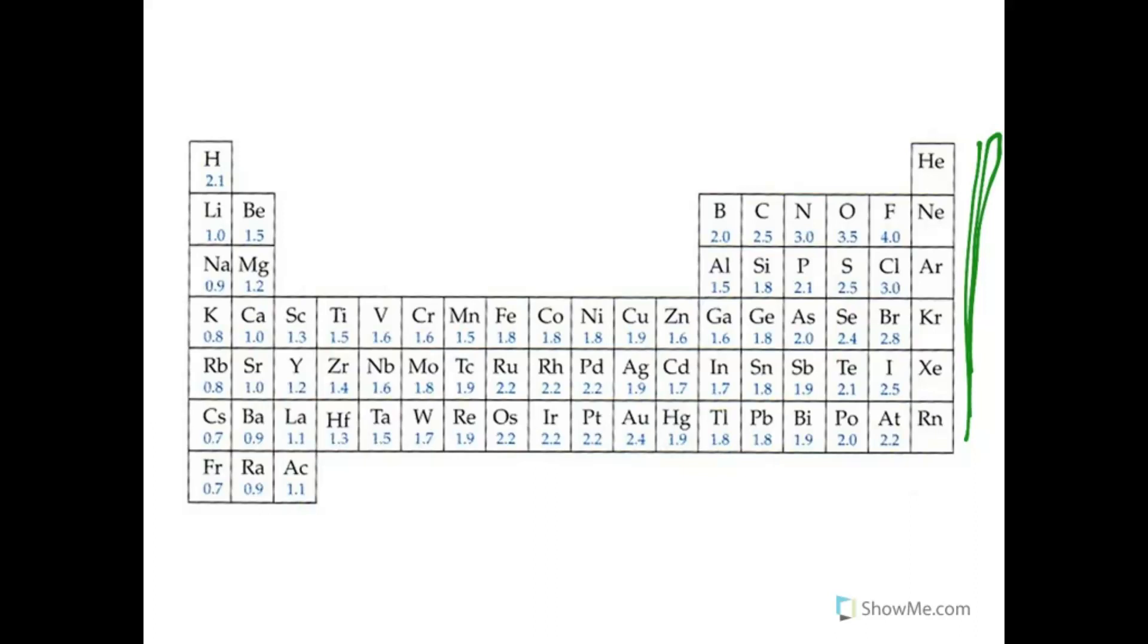These electronegativities that you see here haven't actually been measured. It's not a measured quantity. Fluorine has been assigned an electronegativity of 4. The lowest, cesium and francium, have an electronegativity of 0.7. But remember, this hasn't been measured. These are just assigned values for each element. You don't have to remember the electronegativities. If you ever want to know them, you just look them up in a table such as this.